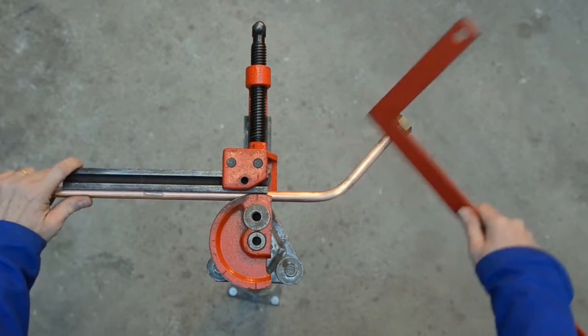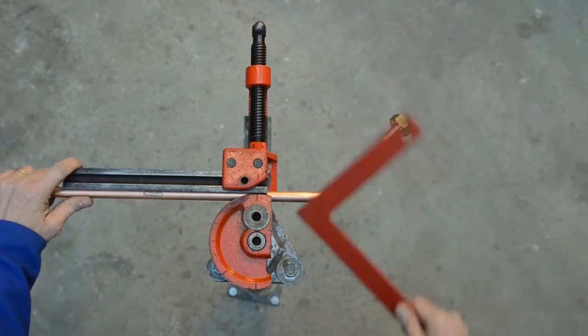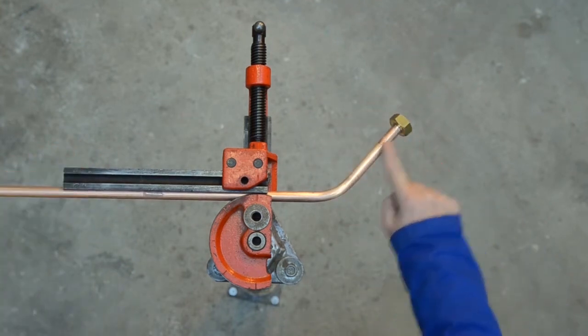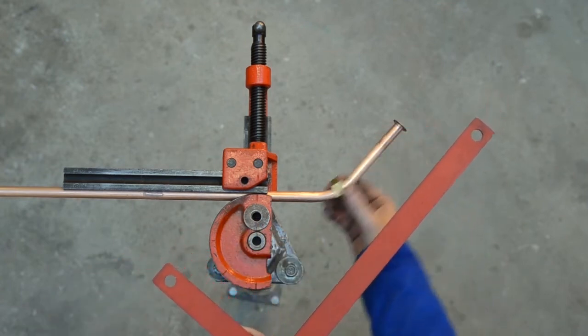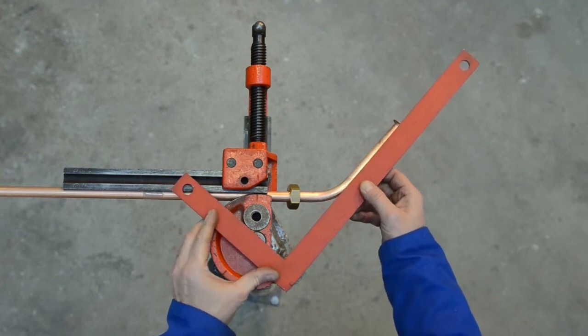Tracez l'axe sur le tube cuivre. Et positionnez l'équerre sur cet axe et sur le repère 45 degrés de la forme à cintrer.